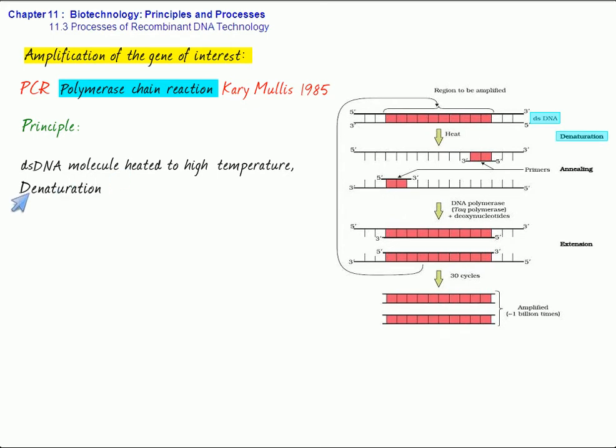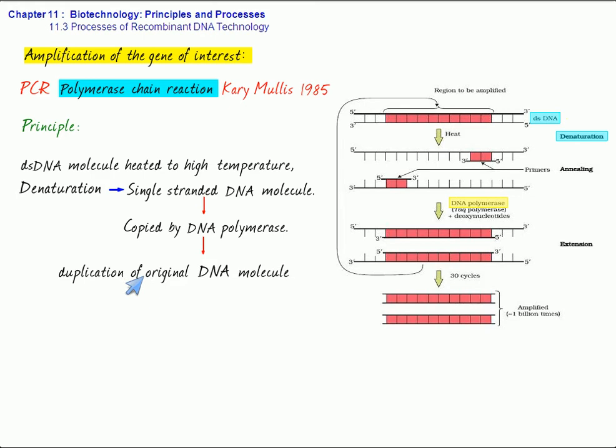And they will give rise to single-stranded DNA molecules. If these single-stranded molecules act as a DNA template and are copied by a DNA polymerase, then it would obviously lead to duplication of the original DNA molecule. And if these events are repeated many times, multiple copies of the original DNA sequence can be generated.